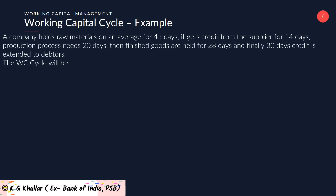Now let us understand this equation of working capital cycle with the help of an example. Suppose a company holds raw materials on average for 45 days, gets credit from the supplier for 14 days, the production process needs 20 days, finished goods are held for 28 days, and finally 30 days credit is extended to debtors.